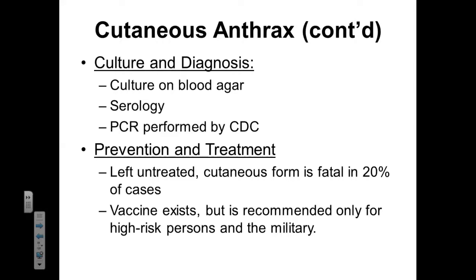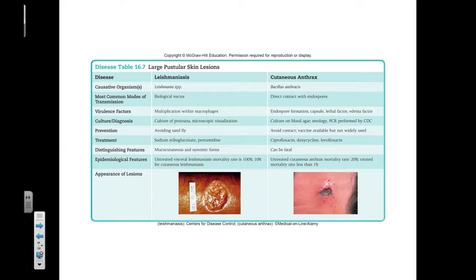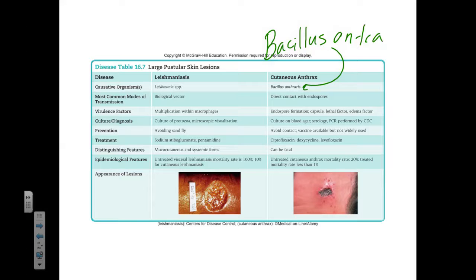There is a vaccine that can help prevent infection with the anthrax bacterium, but this vaccine is only recommended for individuals at very high risk of developing the disease or those who work in the military. So we have leishmaniasis, which is caused by a protozoa and is transmitted by the sand fly, and we have cutaneous anthrax, whose causative agent is Bacillus anthracis. Unlike the protozoa-based infection of leishmaniasis, cutaneous anthrax can be treated with an antibiotic regimen.